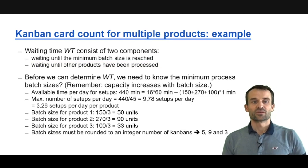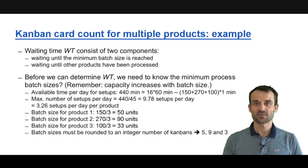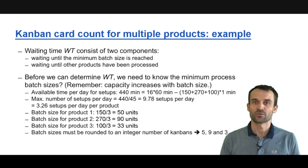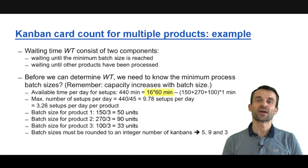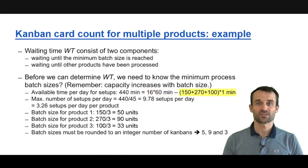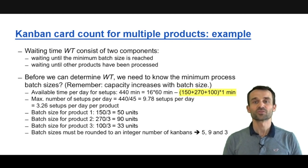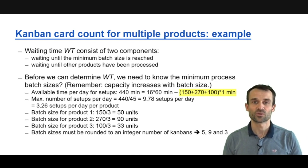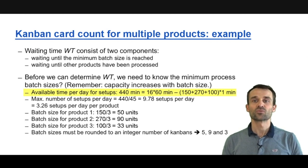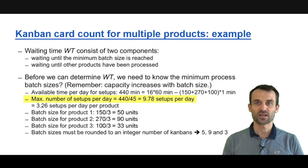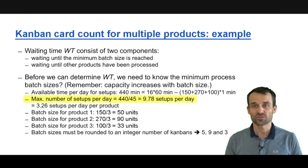To find the minimum batch sizes, we first determine how many setups we can do. We want to do as many setups as possible, because that results in smaller batch sizes. We have 960 minutes available per day. We need 520 minutes for processing (150 + 270 + 100 units at 1 min/unit), leaving 440 minutes for changeovers. Dividing 440 minutes by 45 minutes per changeover gives us 9.78 setups per day, which we round down.